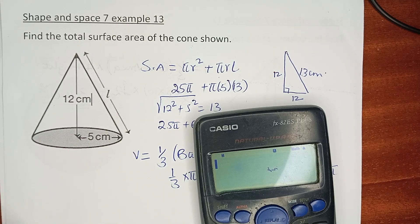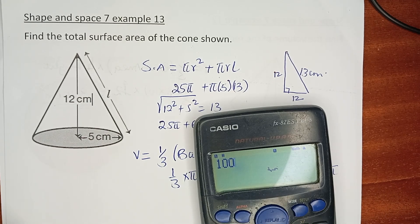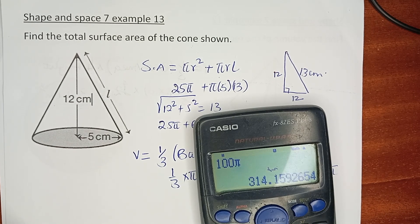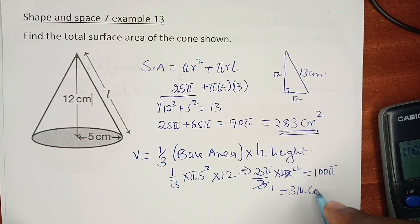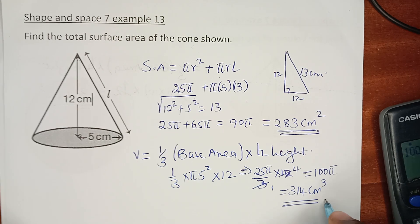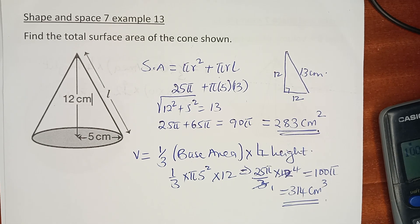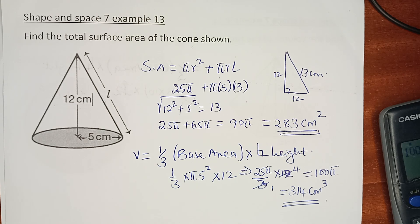100π is basically 314 cm³. That is the volume of that particular cone. Thank you and let's meet in the next question.